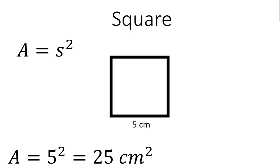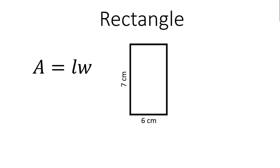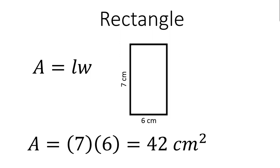All of our units for area are going to be squared units. Next I have a rectangle. The area of a rectangle is equal to length times width. Here the length is 7 centimeters and the width is 6 centimeters, but it honestly doesn't matter which one you say is the length or the width. Substituting into the formula, area is equal to 7 times 6, which is equal to 42 centimeters squared. You have to have squared units.